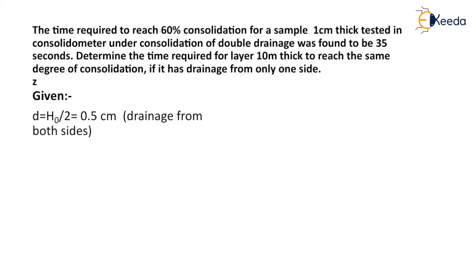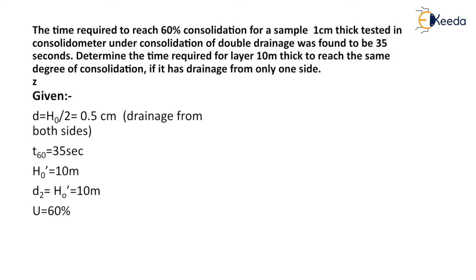The given values are: drainage path D equals H₀/2 in the first case, as there is double drainage, which equals 0.5 cm. The time required for 60% consolidation, T60, is 35 seconds in the first case. In the second case, the thickness of the sample is 10 meters, hence the drainage path D2 equals H₀' equals 10 meters. We need to find the time required for 60% consolidation in the second case.